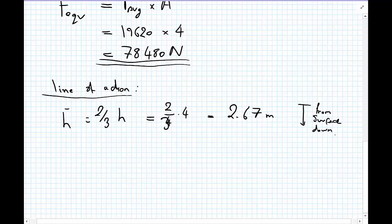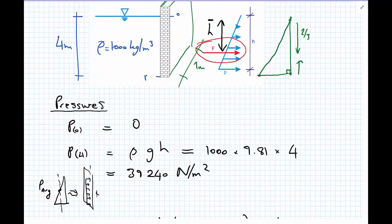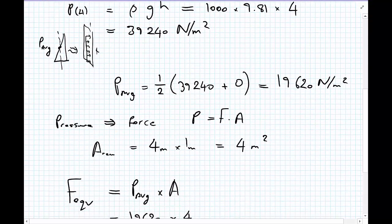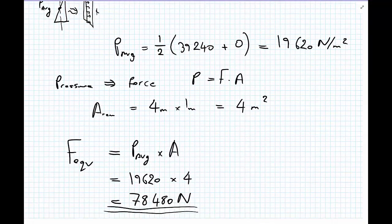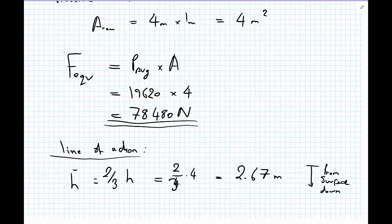So at this point, our problem is solved. In the method we chose to solve it, or the method I've shown, we got from pressures, we calculated an average pressure, which we could then convert to a force. And so once we had our equivalent force from multiplying average pressure times area, we then worked out where the line of action is.